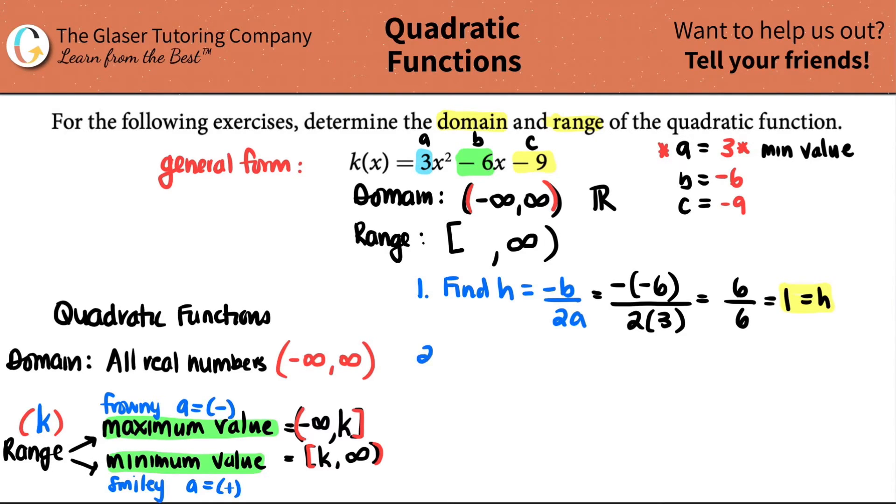Now we can solve for the K value. And the K value is just F of H. This means that you are just plugging in H for your variable. Whether your variable is X or A or B or T or whatever. In this case, they gave us X values. So what you're going to do is I just like to rewrite. And I like to give myself some space. So 3X squared minus 6X minus 9.